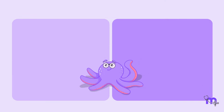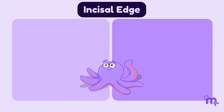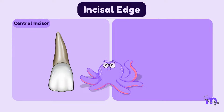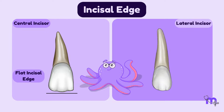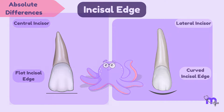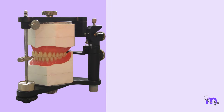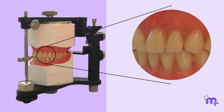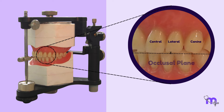Turning our attention to the incisal edges: the maxillary central incisor features a straight and flat incisal edge, while the lateral incisor exhibits a gently rounded or curved incisal edge. This is quite a characteristic absolute difference. During teeth setting, we angulate the tooth so that the incisal edge is parallel to the occlusal plane and 0.5 to 1 mm away.